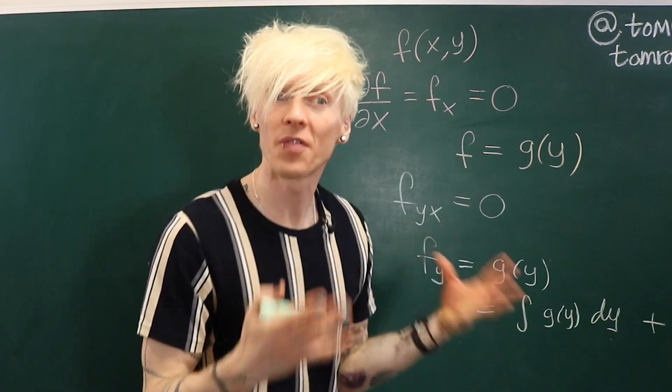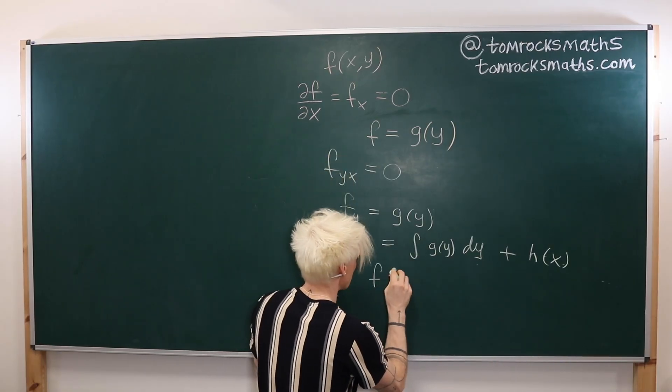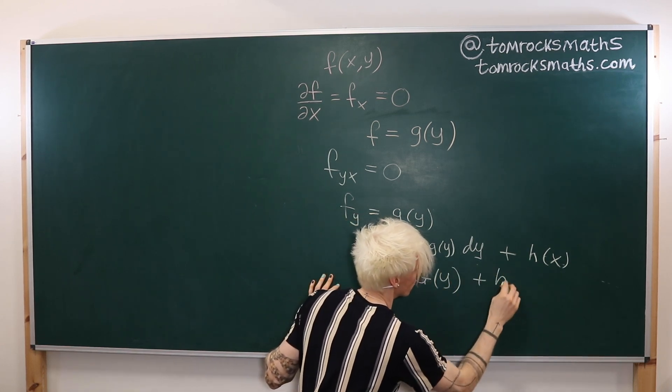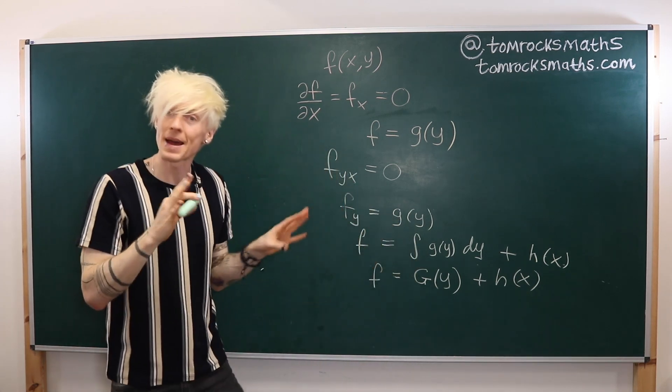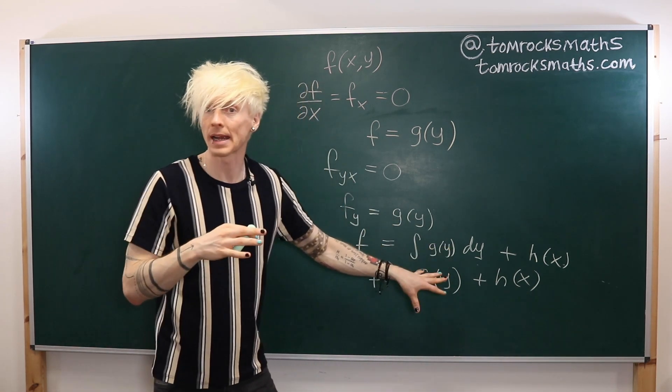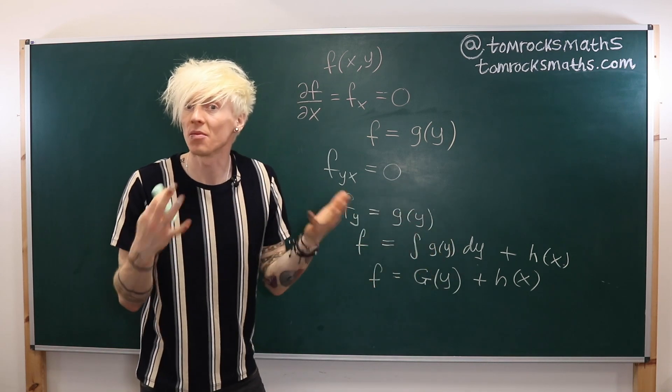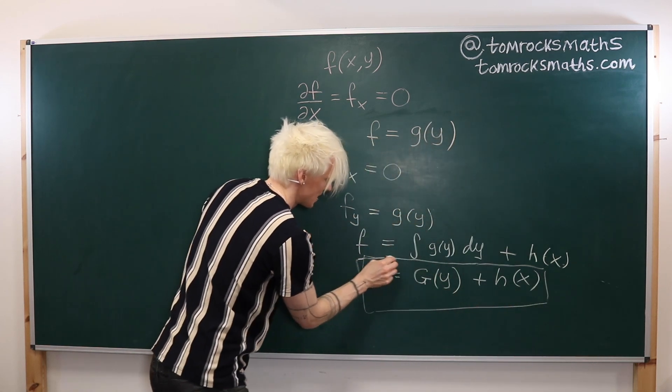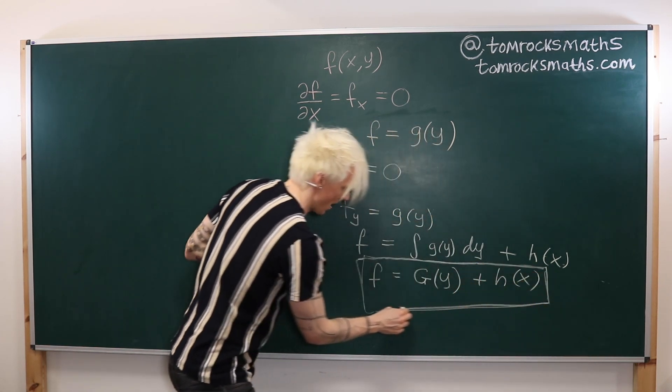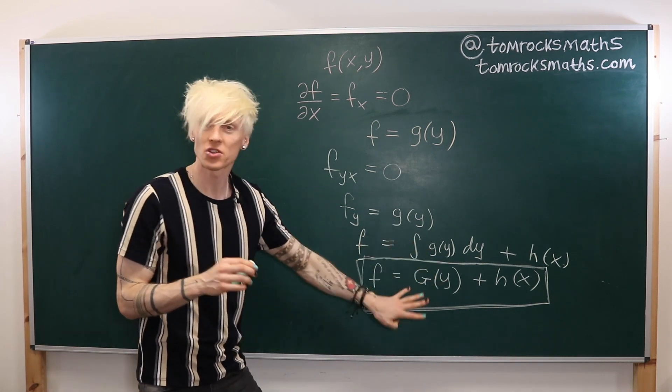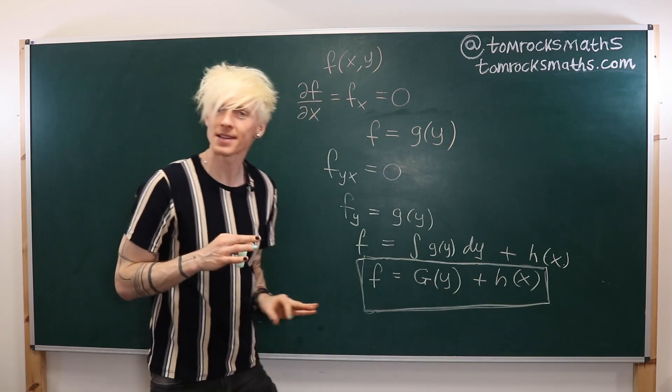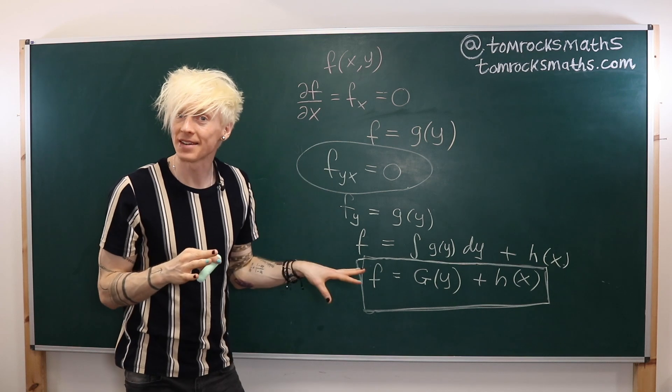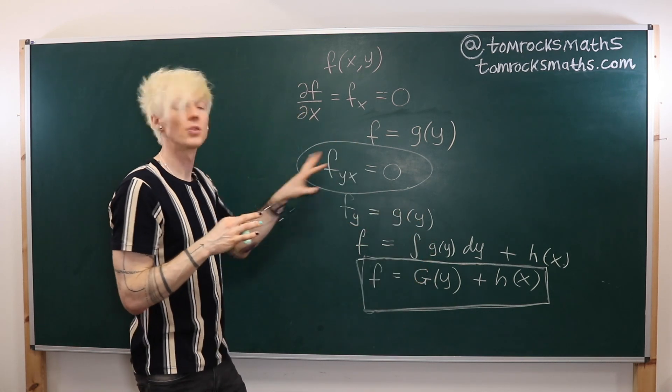We can in fact simplify this even further as we can say the integral of a function of y just gives me another generic function of y. So we could specify that capital G of y is the integral of lowercase g of y. But ultimately it doesn't really matter. The key concept here is that if I have any function f which has some function of y plus some function of x, then when I do an x and y partial derivative on this function I will get zero.